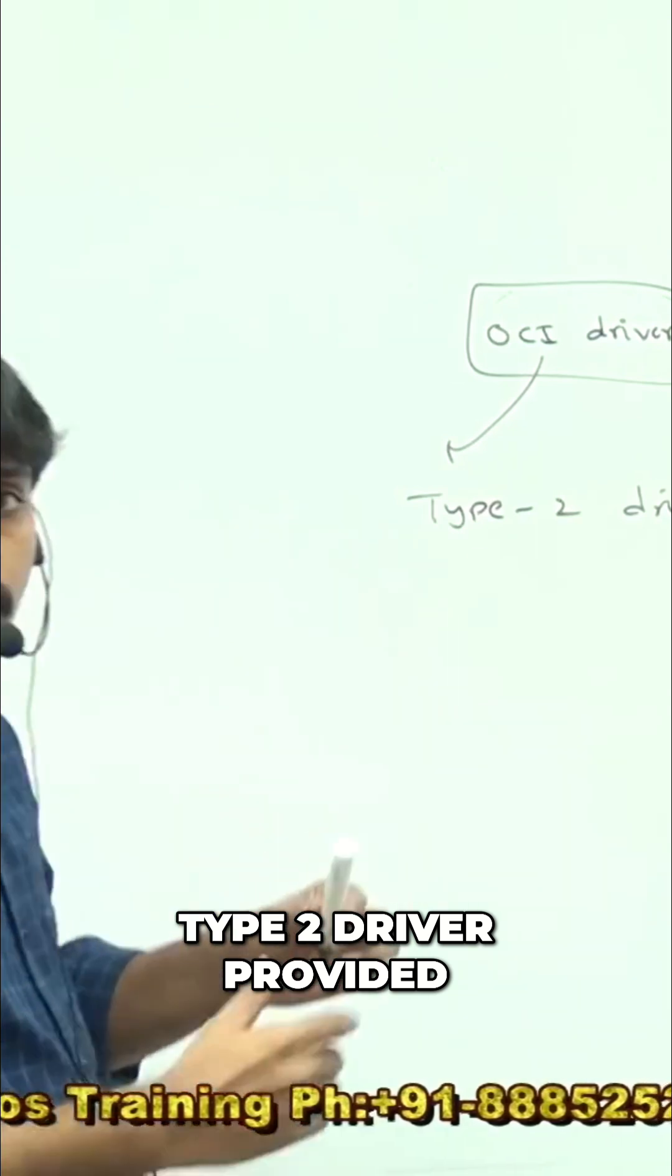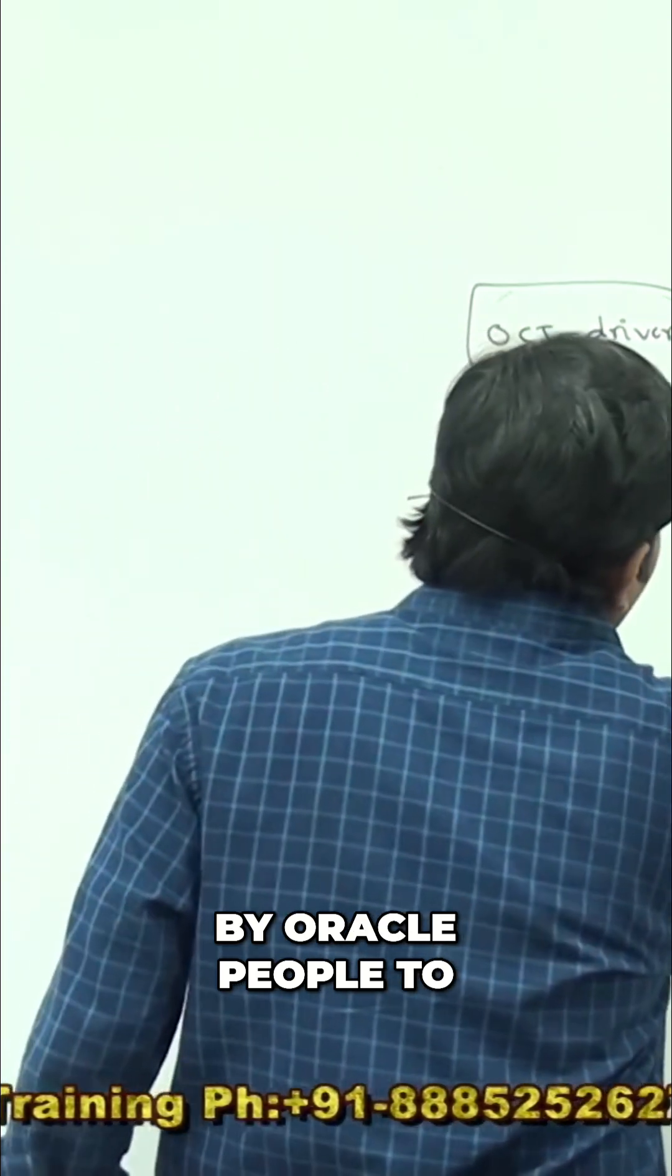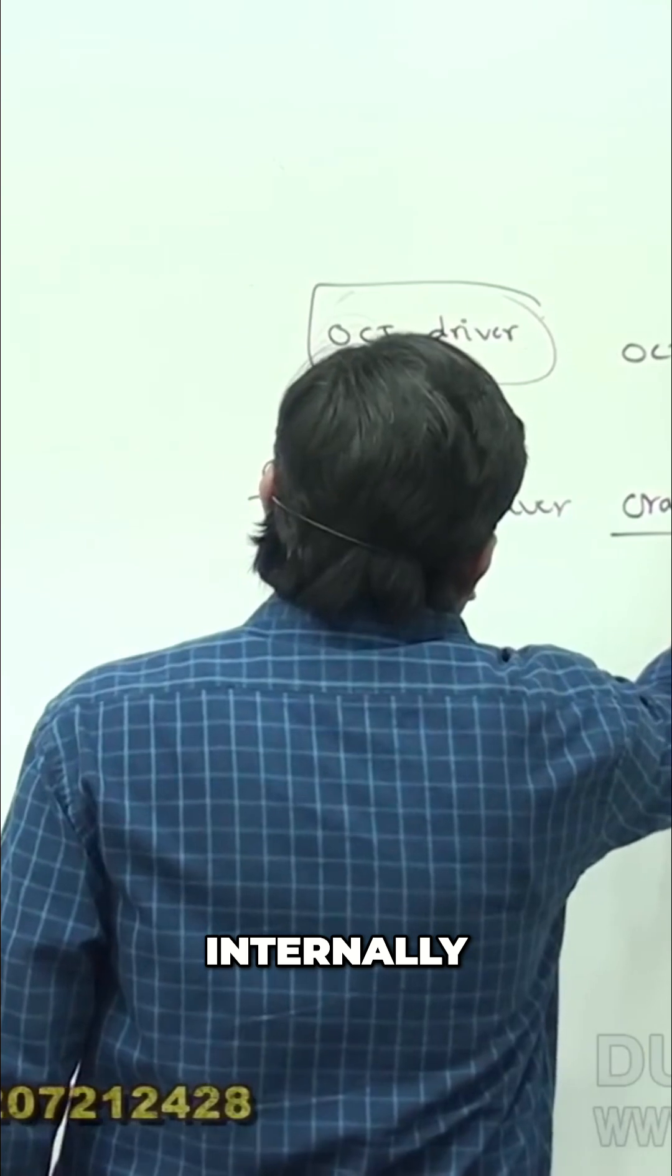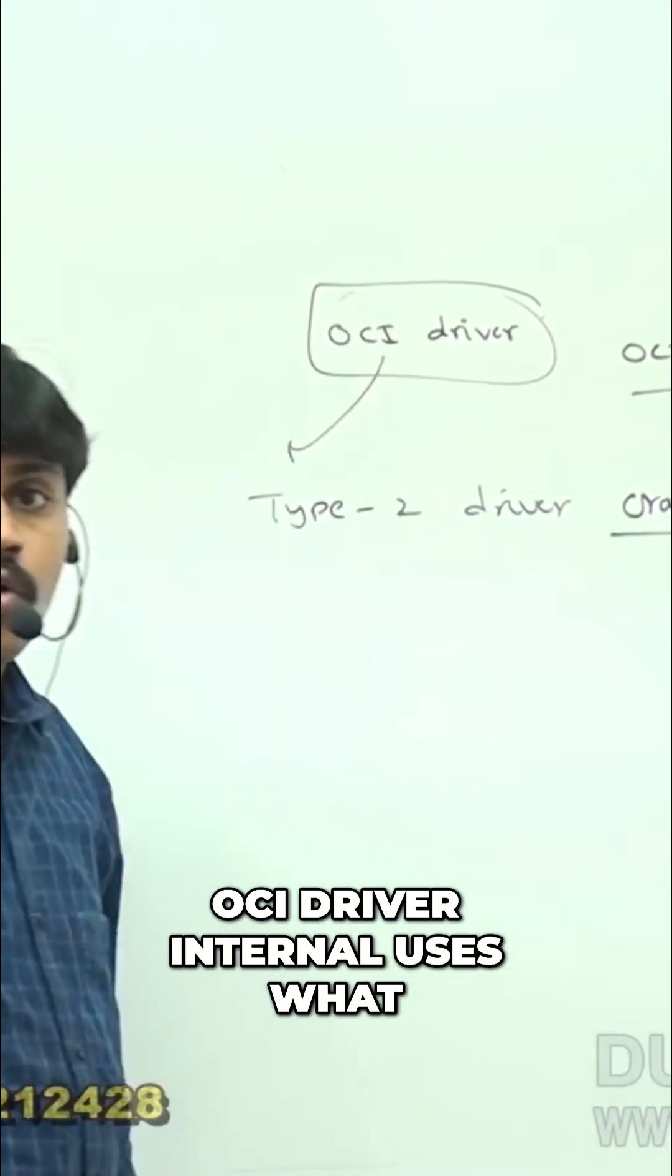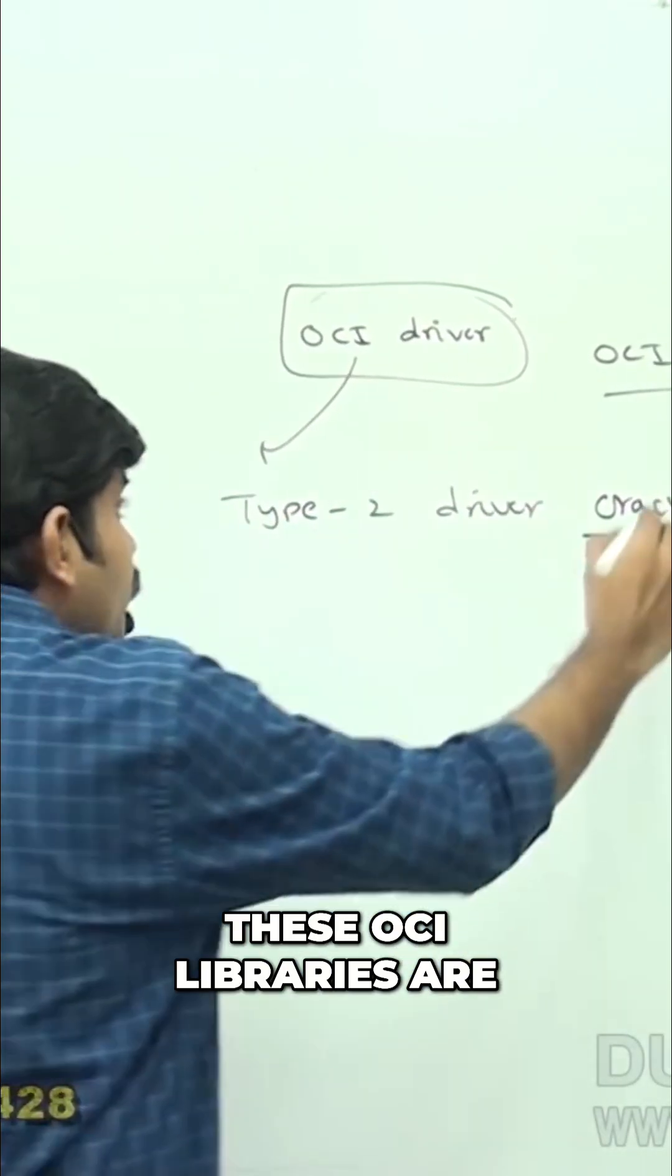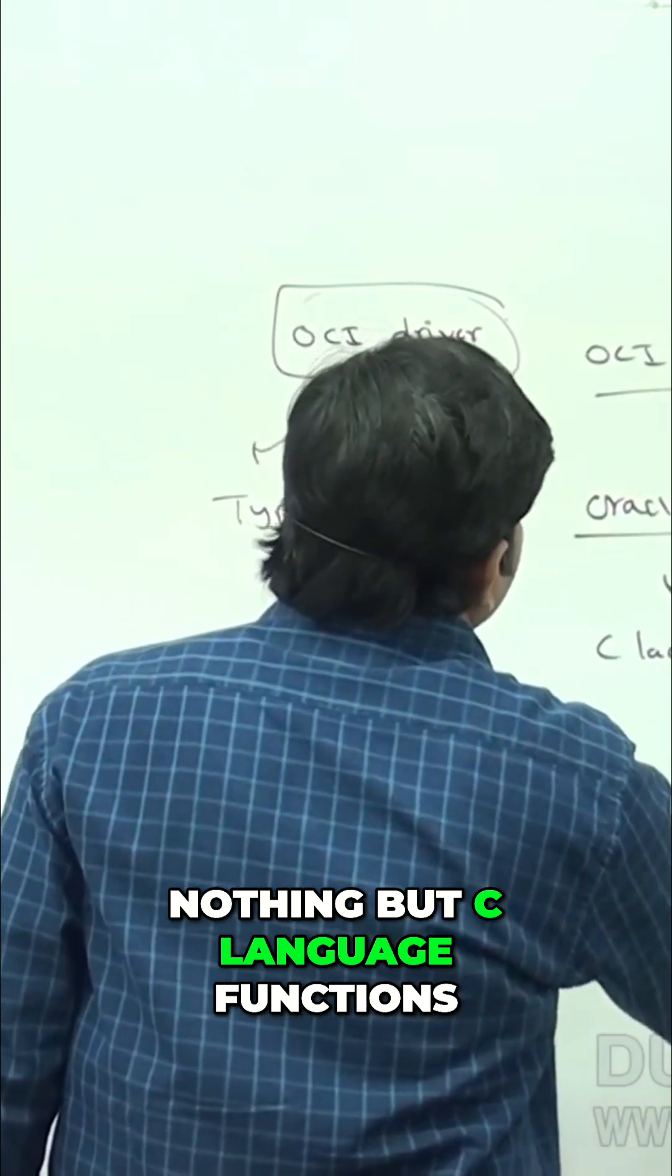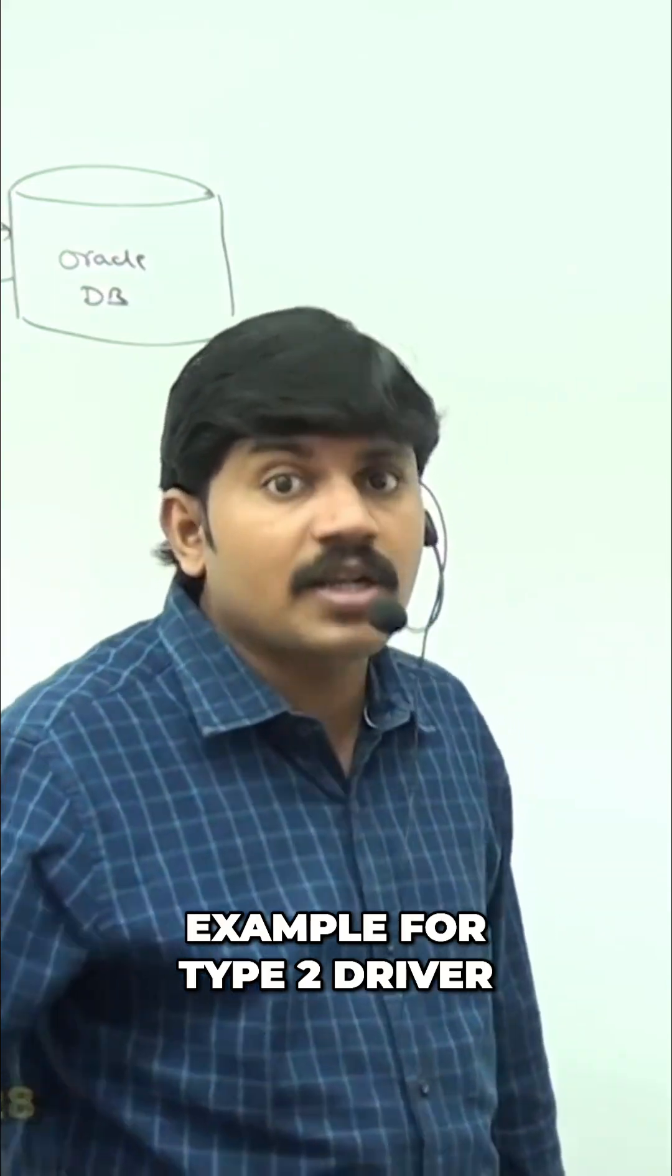To communicate with the Oracle database, internally OCI driver uses OCI libraries. These OCI libraries are nothing but C language functions. Can you give an example for Type 2 driver?